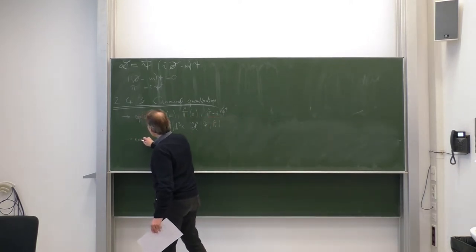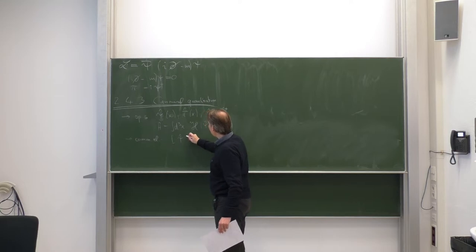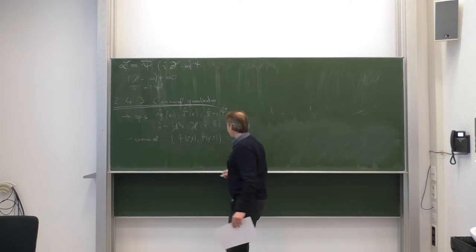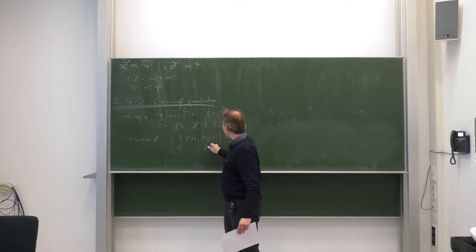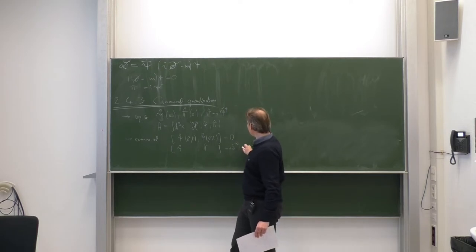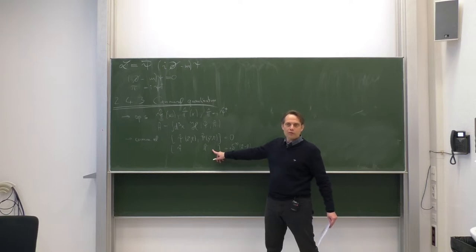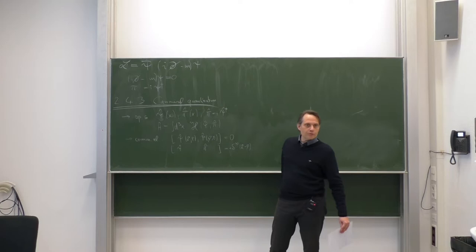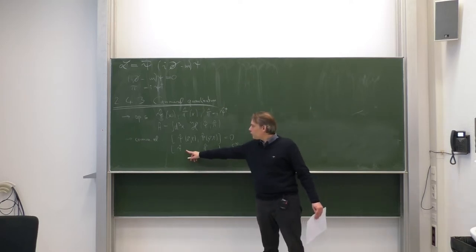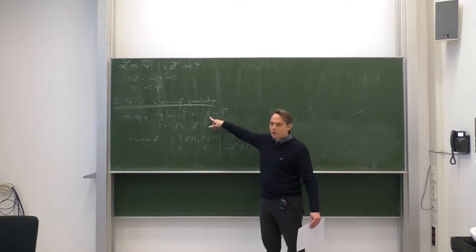Then we have commutation relations — namely, instead of Poisson brackets, commutators. So psi-hat with psi at different space arguments but the same time argument should be zero. And psi-hat with pi-hat with the same arguments is i times a three-dimensional delta function. I stress again that this commutator is different from the scalar field but similar to the Schrödinger field: it is a commutator between psi and psi-dagger that gives the delta function, whereas in the complex scalar field the commutator between phi and phi-dagger was zero. Here it's non-zero because psi-dagger is actually the canonical momentum.